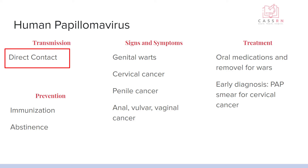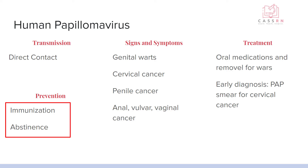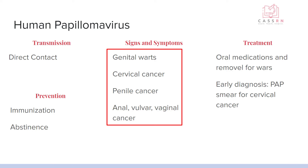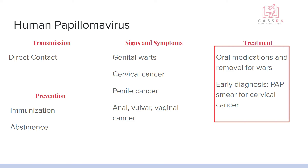Human papillomavirus (HPV) is also direct contact. There's an immunization for this one now, and abstinence will obviously prevent it. Signs and symptoms include genital warts for some strains, but it can also cause cervical cancer, penile cancer, and genital cancers such as anal, vulvar, or vaginal. Because it's a virus, treatment is oral medications and you can get the warts removed. Early diagnosis via pap smear is the biggest thing for cervical cancer.